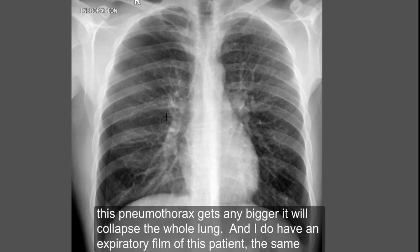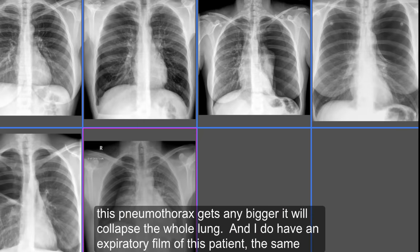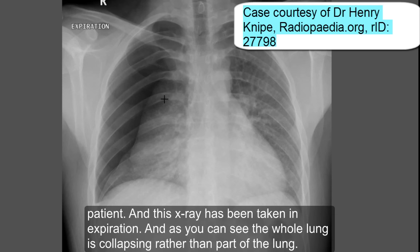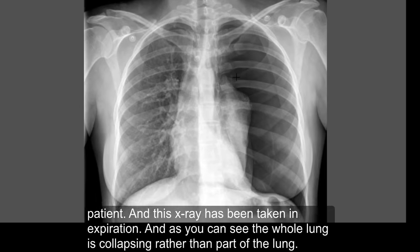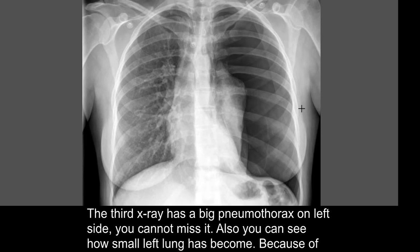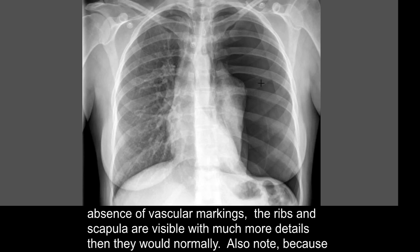If this pneumothorax gets any bigger, it will collapse the whole lung. I have an expiratory film of this same patient, and in this X-ray taken in expiration you can see the whole lung is collapsing rather than just part of it. The third X-ray has a big pneumothorax on the left side. You cannot miss it — you can also see how small the left lung has become. Because of the absence of vascular markings, the ribs and scapula are visible with much more detail than they would normally be.